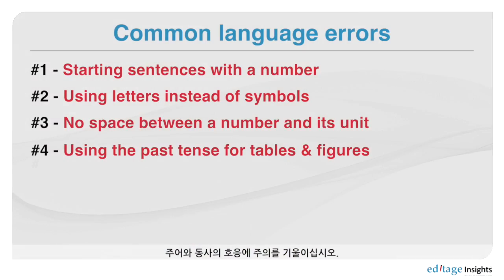Mistake number five is something that especially non-native writers have been facing since studying English: making sure that the subject and the verb agree.